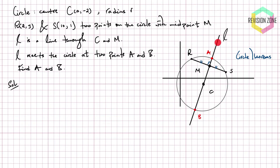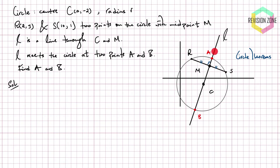From circle theorems, we know that if a line or line segment is basically passing from the centre and intersecting a chord, then that line or line segment is going to be a perpendicular bisector of the chord. So in other words, RS and L are going to meet at 90 degrees, and L is going to perfectly split RS into two equal parts. We could also deduce that directly from the question, because we're told M is the midpoint, L passes through M, so it has to bisect RS.